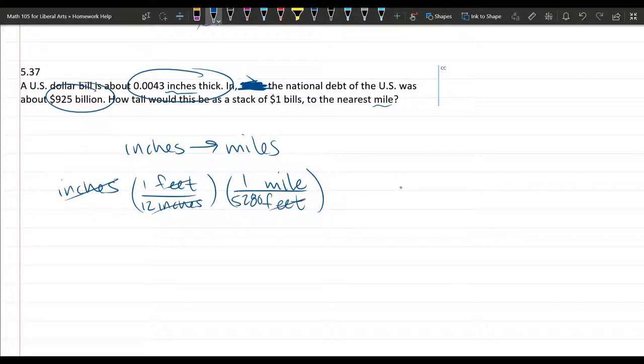Now feet are going to cancel. And what we have left, we have one mile divided by 12 times 5280. So that's what we're going to multiply at the very end. And this turns inches into miles.